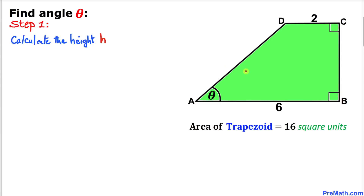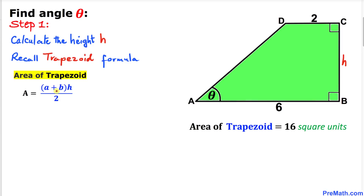Here's our very first step: let's calculate the height of this trapezoid. I'll call this height BC as h. Recalling the trapezoid area formula: Area = (a + b) × h / 2. I'll call side AB lowercase a and side CD lowercase b. The area of the trapezoid is 16 square units, so: 16 = (6 + 2) × h / 2.